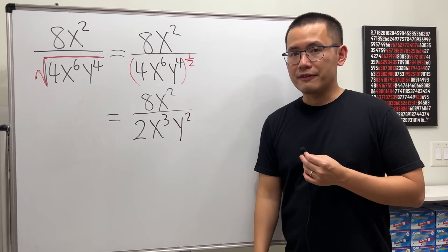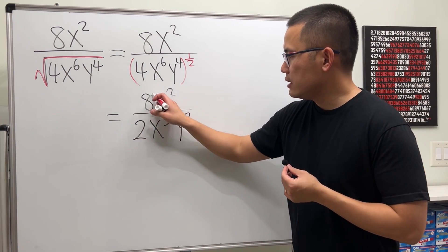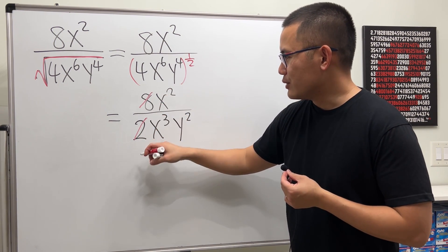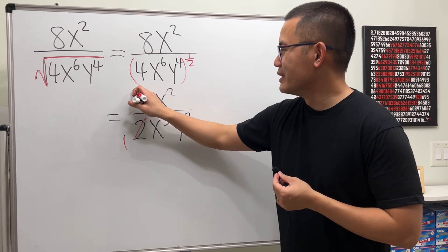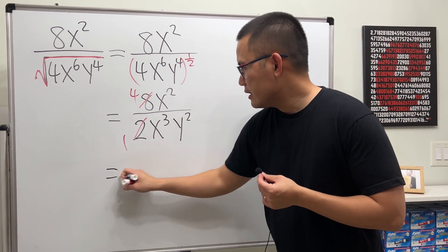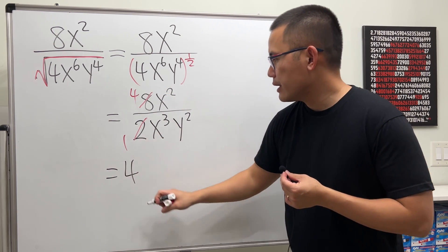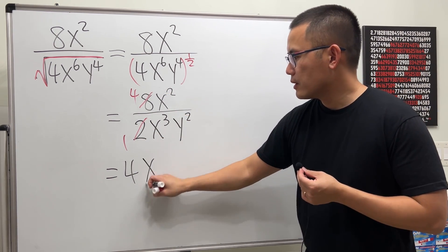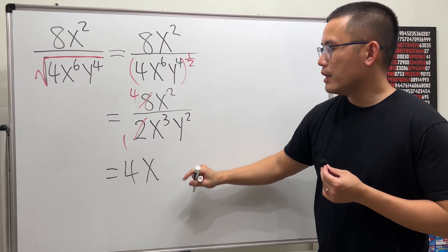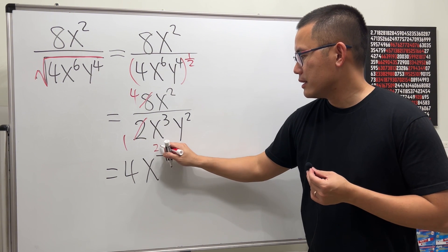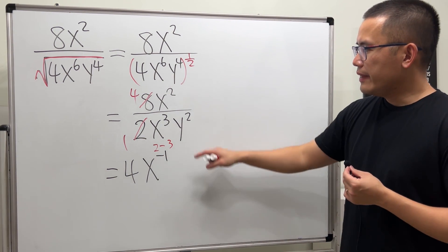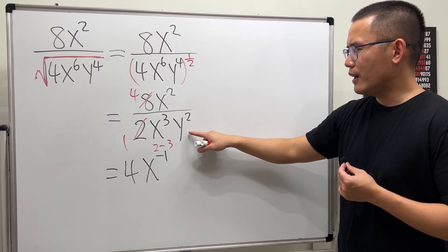So that's what we have, and then we can reduce: 8 and 2. 2 goes into 2 one time, 2 goes into 8 four times. So we first end up with 4, and then for x we do 2 minus 3, which gives us negative 1. That's the power for x, and now we have 4 over x to the first power.